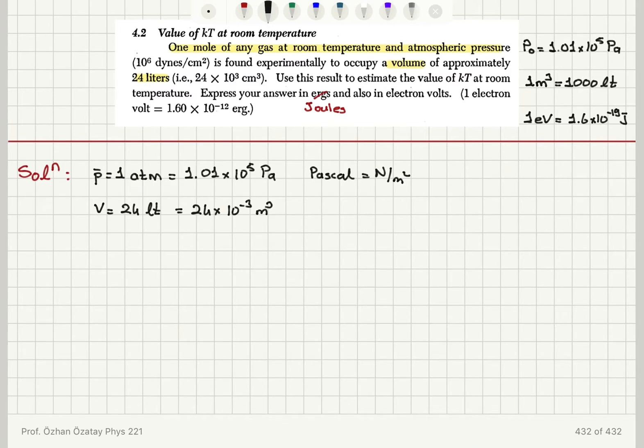Now we can use the ideal gas law and we also know that one mole corresponds to a number of particles, Avogadro's number, 6.02 times 10 to 23 molecules. So we have so many molecules in one mole.